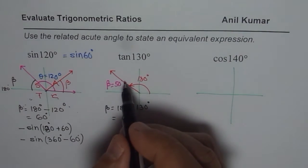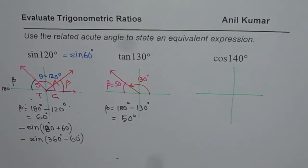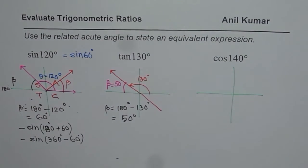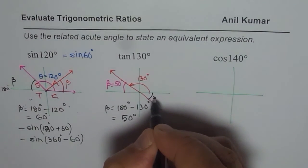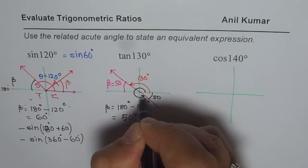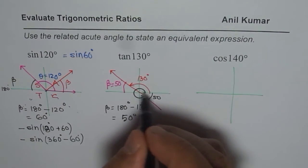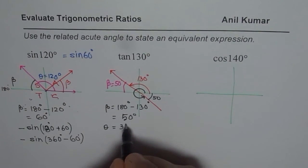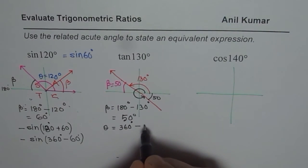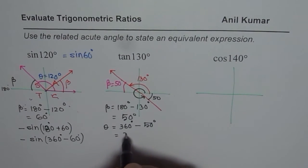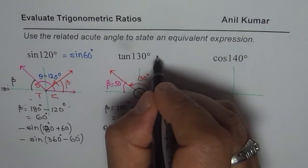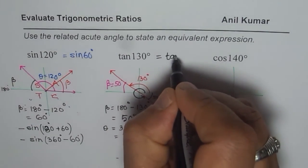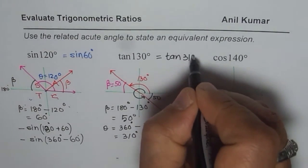Tan is negative here. Tan will also be negative in quadrant 4. If the acute angle is 50 degrees, then the principal angle in quadrant 4 is 360 minus 50, which equals 310 degrees. So we can write tan of 130 degrees is equivalent to tan of 310 degrees. Both will have negative values.